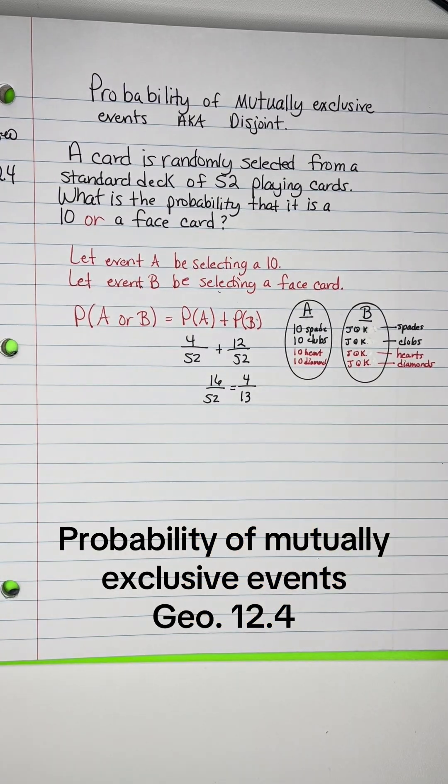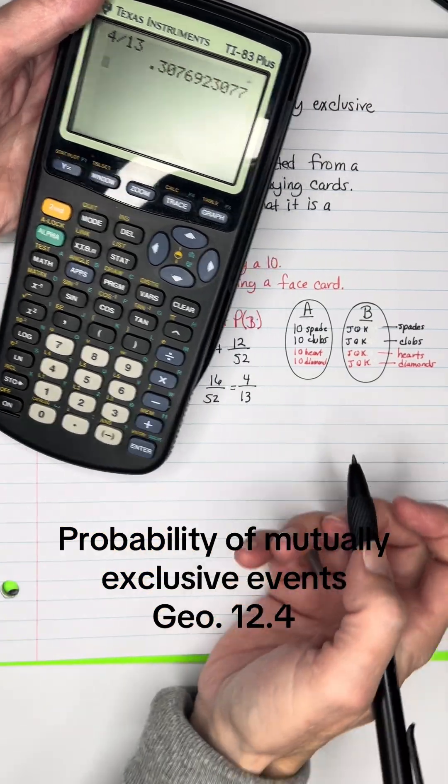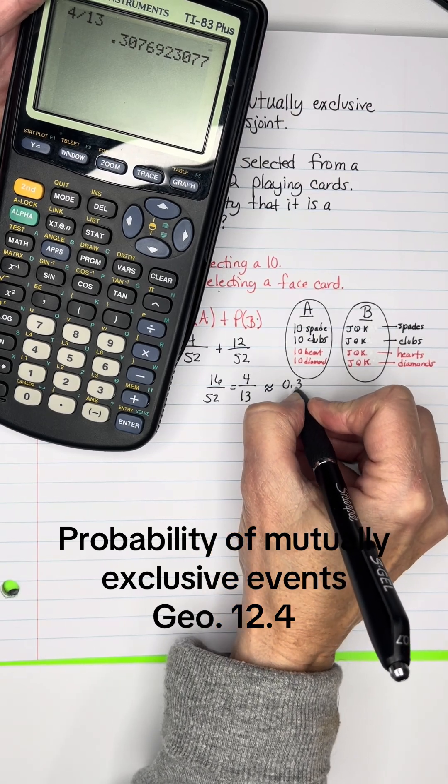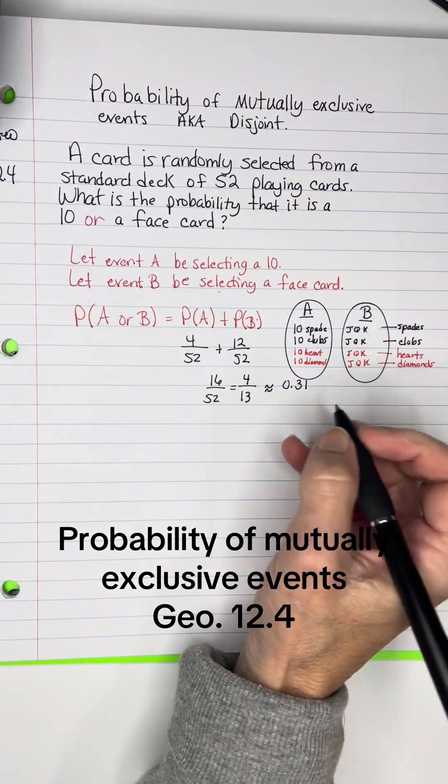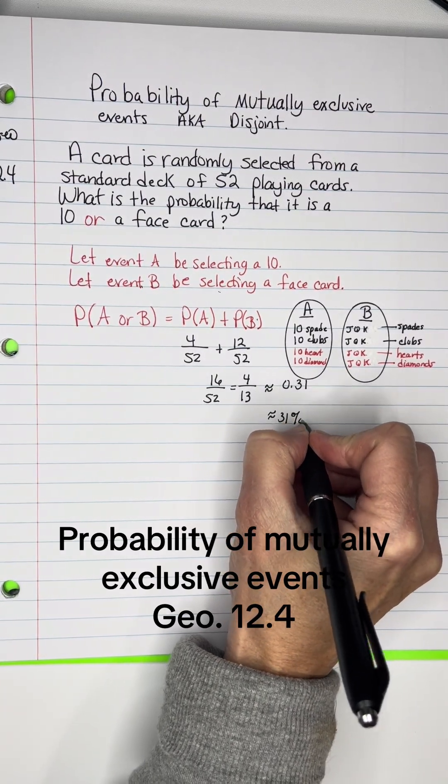And then, let's just see what that is as a decimal. 4 divided by 13 is approximately 0.31, rounded off, which is approximately 31 percent.